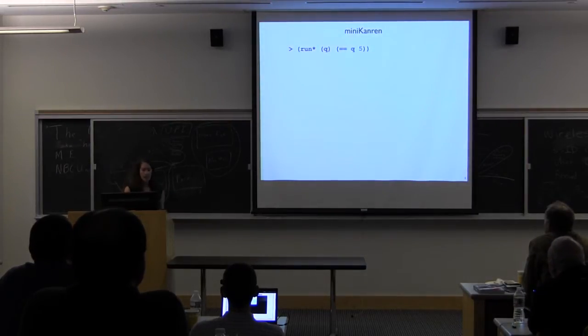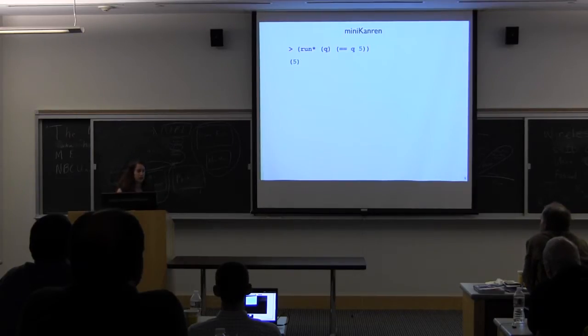So this is what the general interface looks like. You can ask Minicannon to give you back all the answers for a variable q, where q is unified with the number 5. It says, OK, it's just 5.